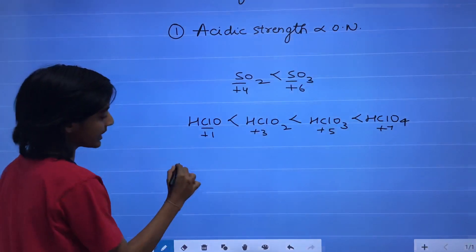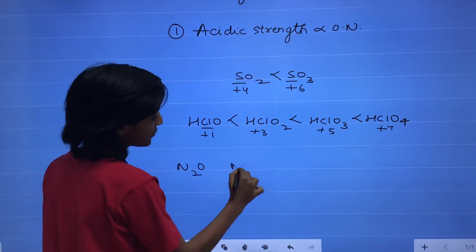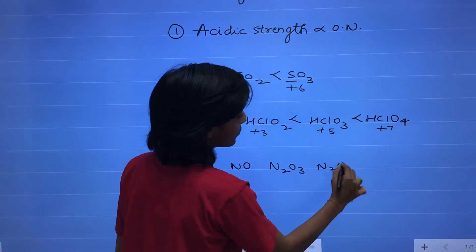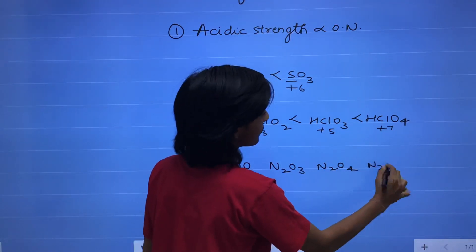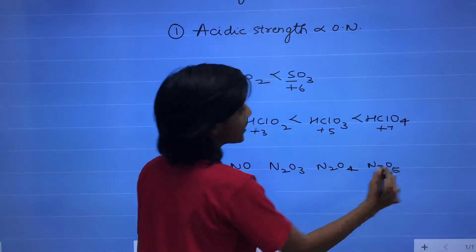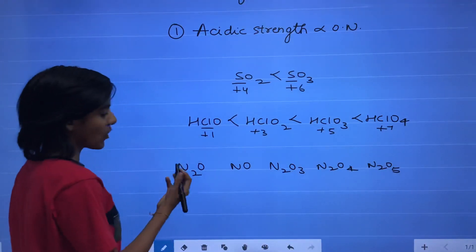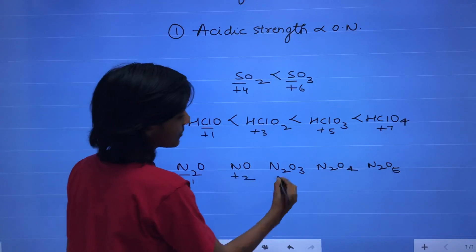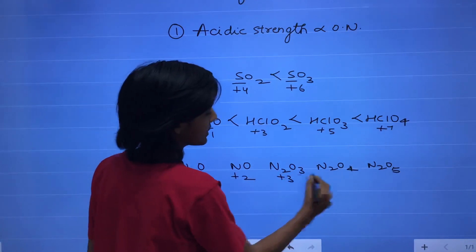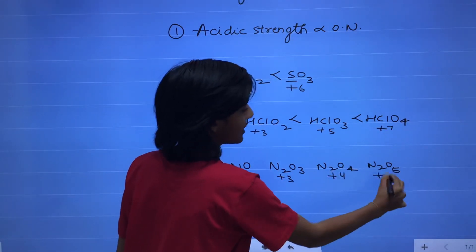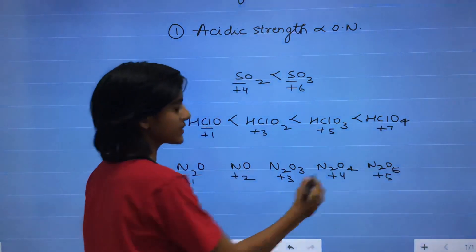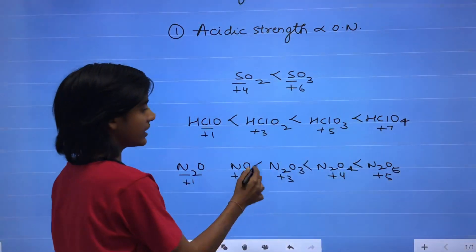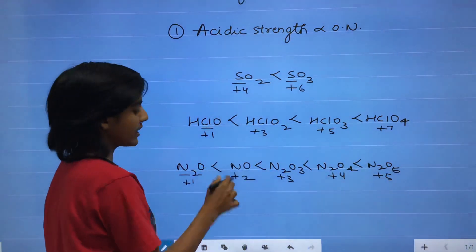Another example: if we compare N2O, NO, N2O3, N2O4, and N2O5, the oxidation state of nitrogen is +1, +2, +3, +4, and +5 respectively. So N2O5 is more acidic than N2O4, N2O3, NO, and N2O.